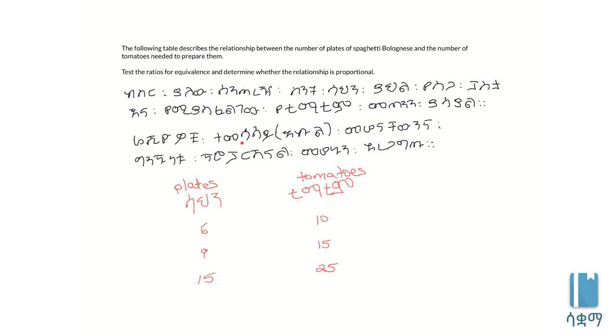The ratios will show if each column is proportional or not. For spaghetti Bolognese, we need to see if the ratio between tomatoes and plates remains constant. We'll check if they have the same ratio throughout.